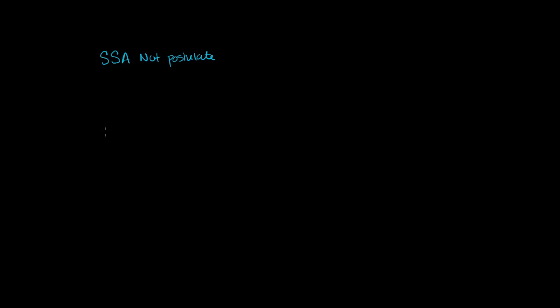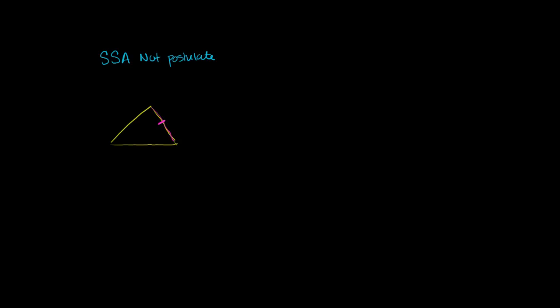So let's think about a triangle here. Let's say I have a triangle that looks something like this. And let's say we've found another triangle that has a congruent side — a side congruent to this side right over here. Next to that is a side congruent to this side right over here. That side is one of the sides of an angle, and that other triangle has a congruent angle right over here. Only that second side is part of this angle. So this is side-side-angle.